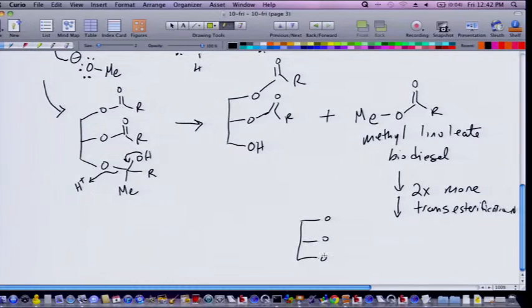We have to do 2x more transesterifications. And once we do that, then we will have done this. We'll have 3 methyl ester products. So this is your glycerol. And those are your 3-methyl linoleates.